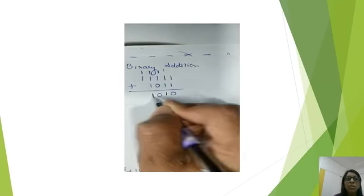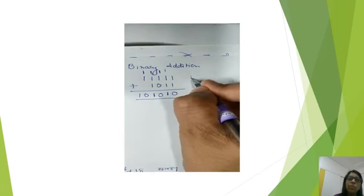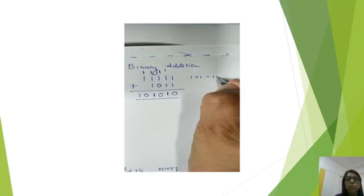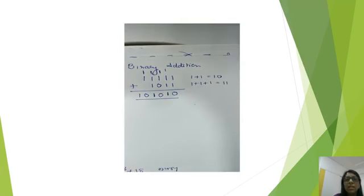1 plus 1 is 0, again three 1's gives sum 1 and carry 1, and 1 plus 1 is 0. You need to remember that 1 plus 1 gives 10, not ten, it is 1 and 0. That is 0 is the sum and 1 is carried forward. But when it is 1 plus 1 plus 1, then 1 is the sum and 1 is carried forward.